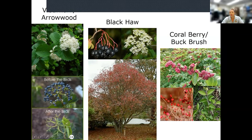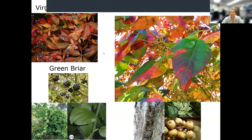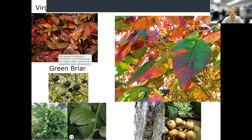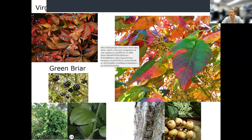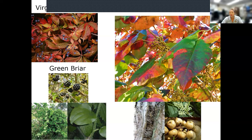Coralberry and buckbrush are pretty but not the best food source — wildlife will eat them but they're not very nutritious. It's often a sign an area was overgrazed because cattle didn't like to eat buckbrush. Going into fall, we'll see virginia creeper, poison ivy, and greenbrier. Poison ivy is a really good food source for birds — 75 different species of songbirds eat poison ivy berries, and it's nutritious and delicious for them.